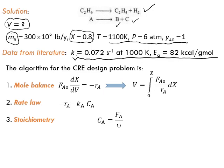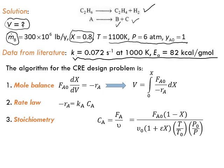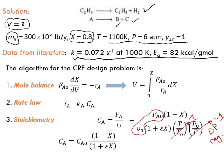Next comes the stoichiometry. We write CA equals FA over the volumetric flow rate, starting from the definition of concentration. Since the operation is isothermal, the temperature ratio is one. We can also assume negligible pressure drop, so P0 over P equals one. Therefore, CA equals CA0 times (1 − X) divided by (1 + εX).